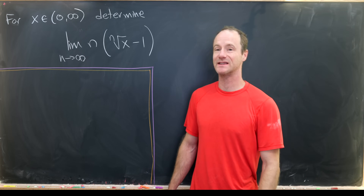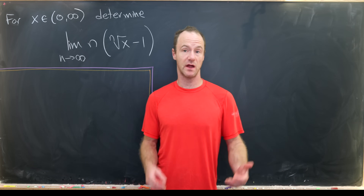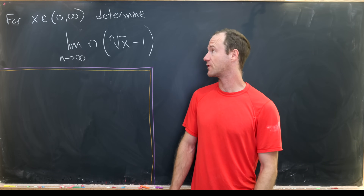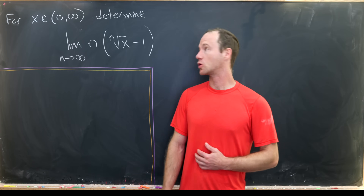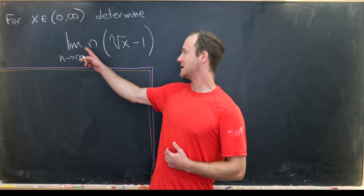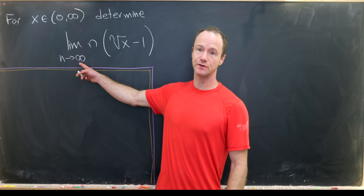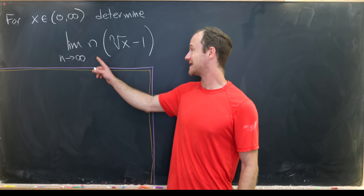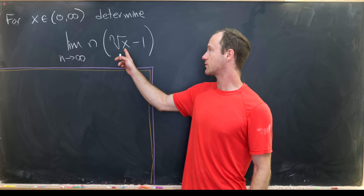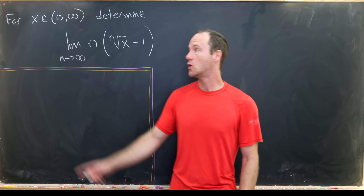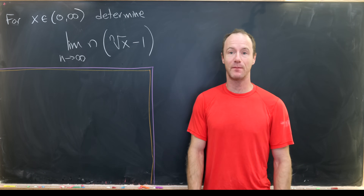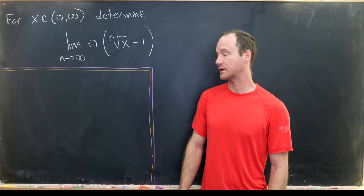Today we're going to look at a nice limit problem and we're going to solve it two different ways. Our goal is to find the limit as n goes to infinity of n times the nth root of x minus one, where x is any positive real number.